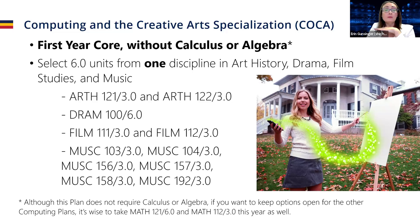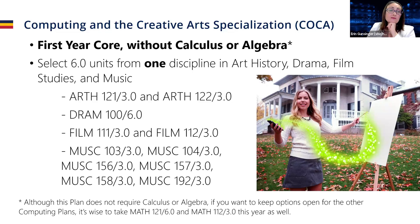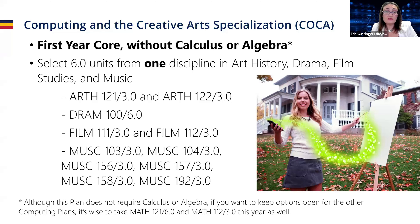For computing and creative arts, it does not require calculus or algebra, but you want to keep your options open in case you change your mind. For this plan, you need six units from one discipline in art history, drama, film studies, or music. All of this information is available on our website and in the academic calendar.